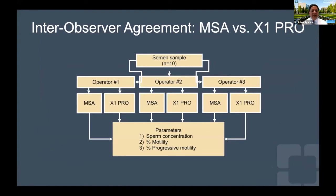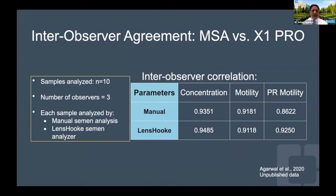Looking at inter-observer agreement — essentially between different operators — three operators counted 10 samples by manual and X1 Pro for all semen parameters. The results show a very high degree of inter-observer agreement of more than 0.9, or 90 percent, for sperm concentration, total motility, and progressive motility using X1 Pro. The results for LensHook are comparable to manual semen analysis conducted by a trained technologist.